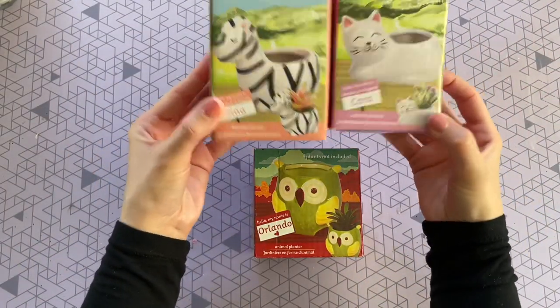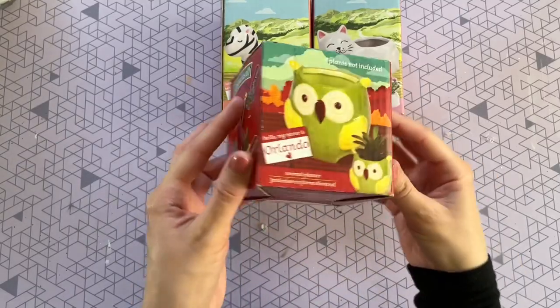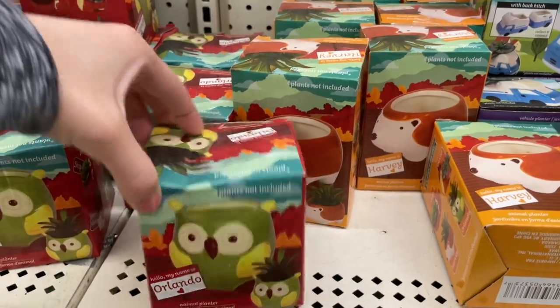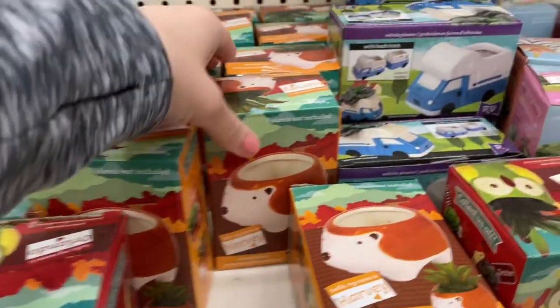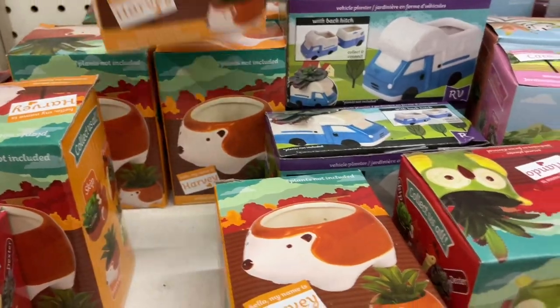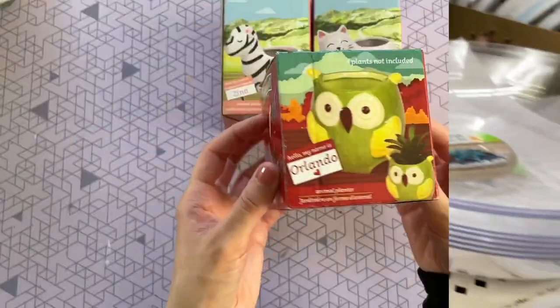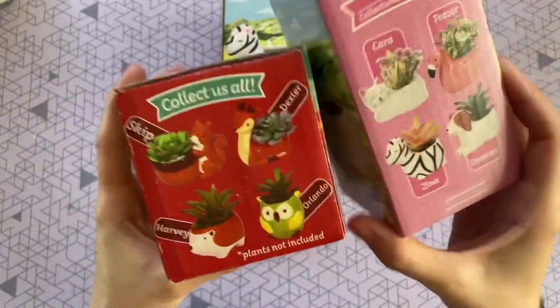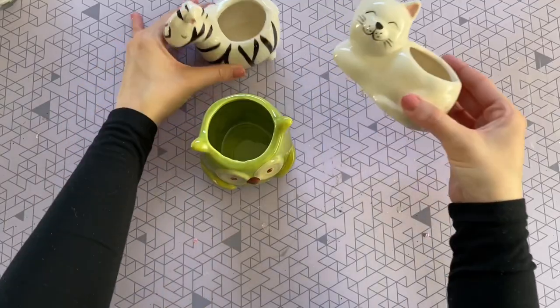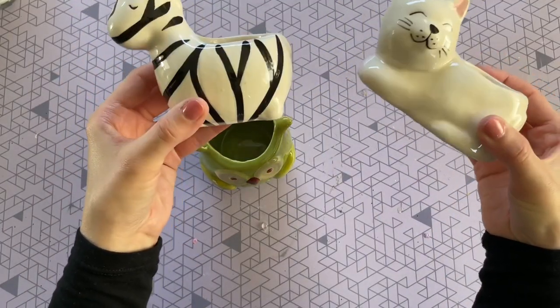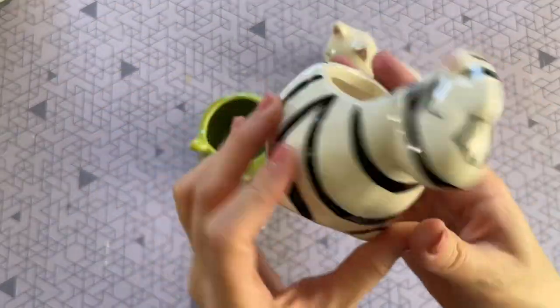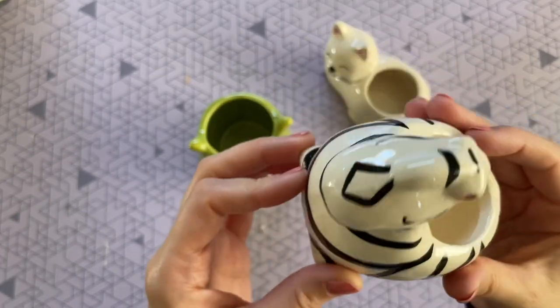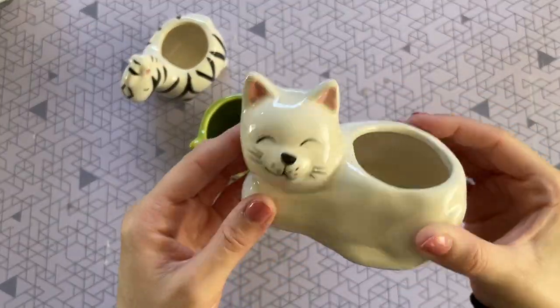For this next DIY, I'm going to be using three of these animal planters from the Dollar Tree. So I actually found these in their floral section and they had a ton of different ones to choose from. A lot of cute designs. So definitely pick out your favorite. I'm going to be showing you two different versions of this DIY. So the first thing you can do with these is turn them into a planter just like the picture, or you can even turn these into small candles. So that's what I'm going to do with my zebra and my cat. And then for the owl, I am going to turn it into a planter, but kind of give it a little bit of a makeover.